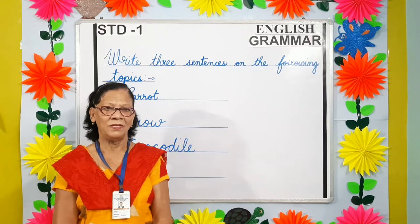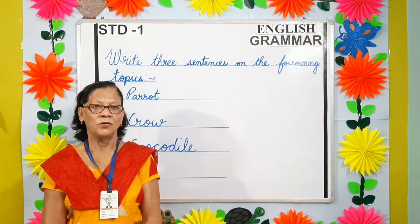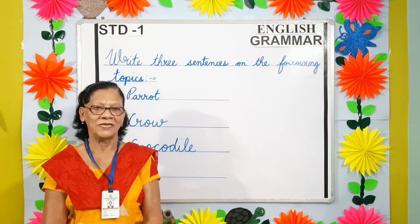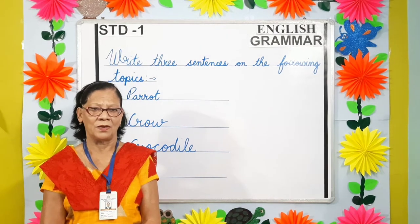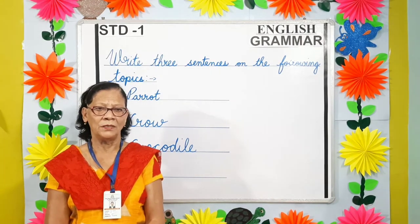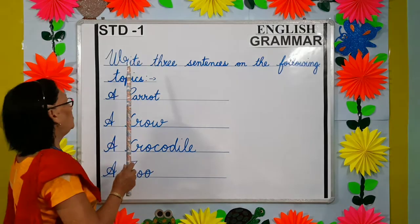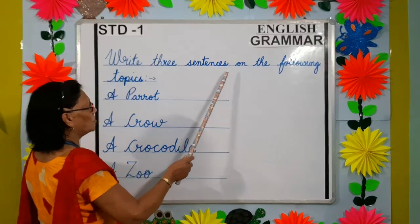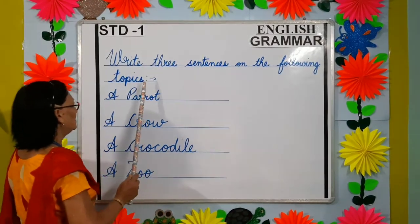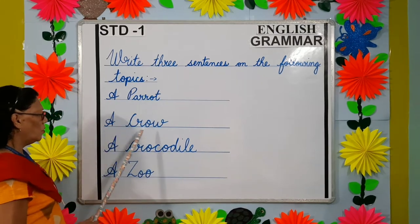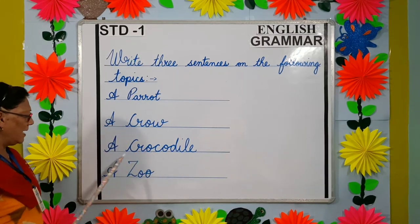Good morning parents and my dear students. Today I am going to teach Standard One English grammar. We are going to learn how to write three sentences on the following topics: a parrot, a crow, a crocodile, and a zoo.